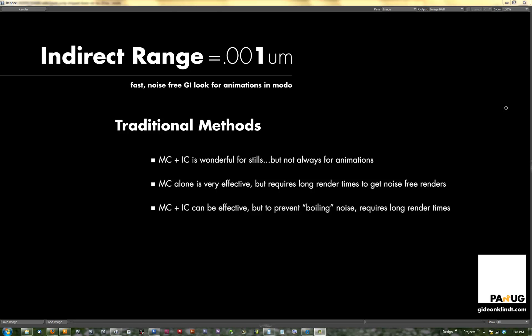Hello everyone, this is Gideon Clint. This is a reproduction of a demonstration I gave during the first Portland Area Moto users group. It's about how to use indirect range at extremely low values to achieve a GI look for your renders that is fast and noise free. As we all know, trying to reproduce deformations in an animation and keep it from having a noisy look is kind of hard, so that's why I chose to share this method.